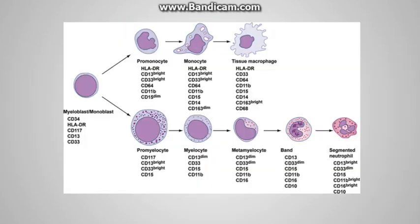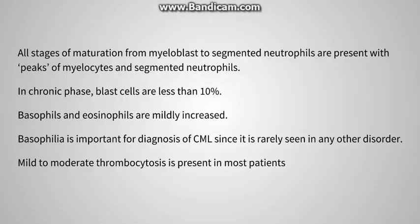To understand the WBC findings, recall hematopoiesis: from myeloblast, there is generation of promyelocyte, then myelocyte, then metamyelocyte, then band cells, and lastly segmented neutrophils. In CML, we find cells from all ranges of maturation, but the predominant cells are myelocytes and neutrophils — the peak will be at myelocytes. Blasts will be less in number, less than 10% — this is very important. A very characteristic finding of CML is basophilia, which is seen early and is important for diagnosis.